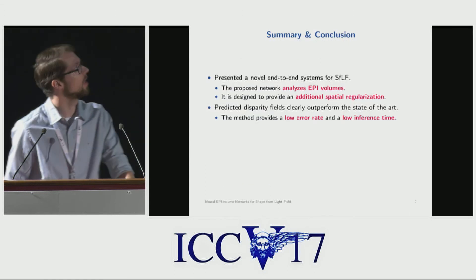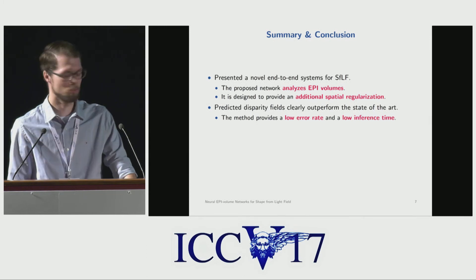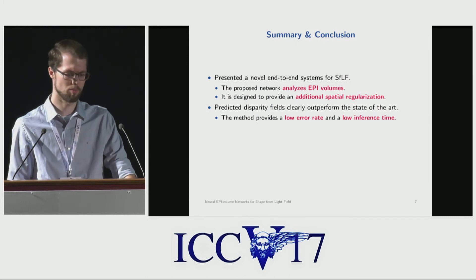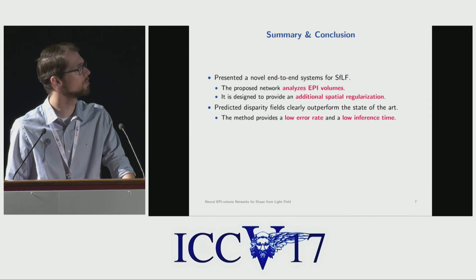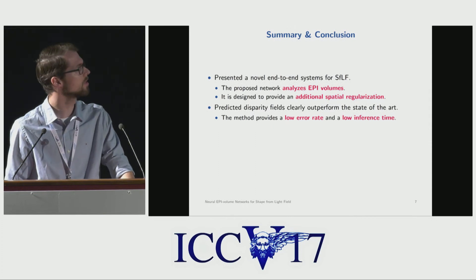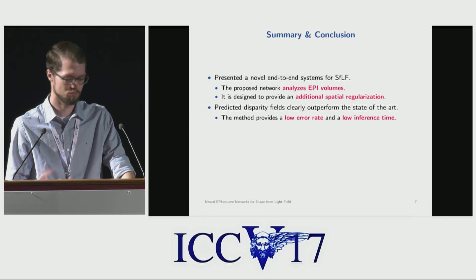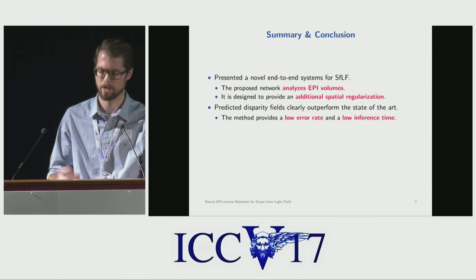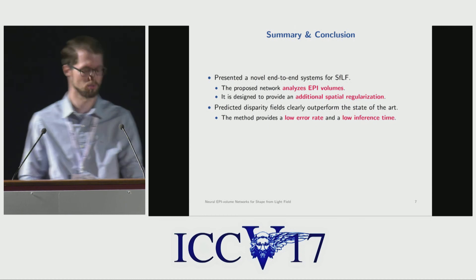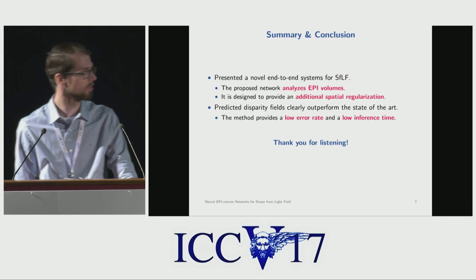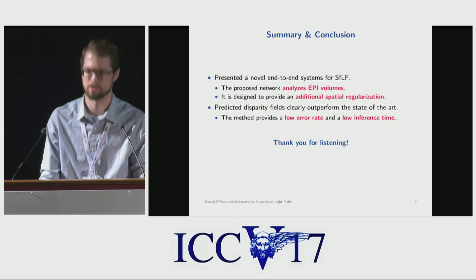To sum up, we present a novel end-to-end system for shape from light field, which basically analyzes epipolar image volumes and which can train a spatial regularization. The predicted disparity maps can clearly outperform the state-of-the-art, and not just in a lower error rate, but also in a lower inference time. If you are interested, it's poster 5, and thanks for listening.